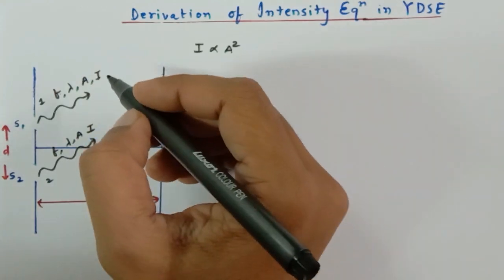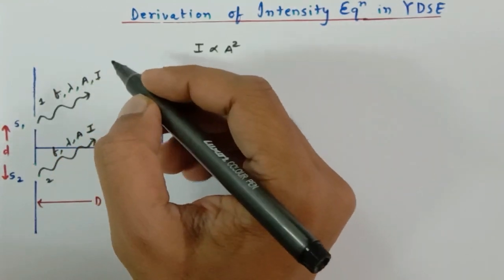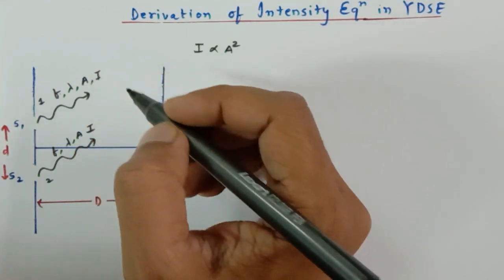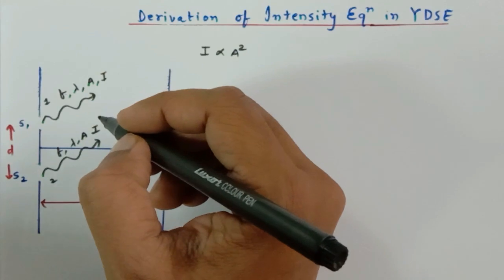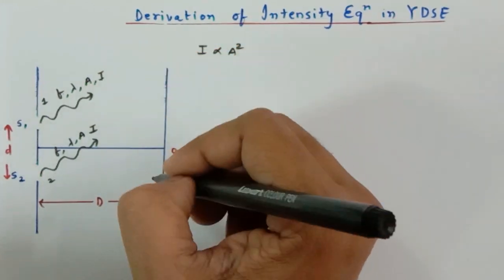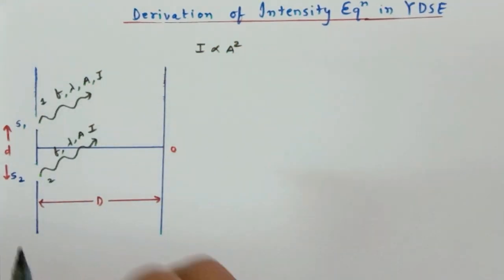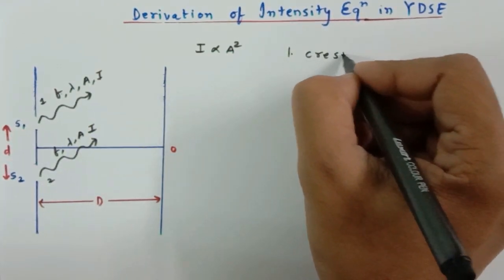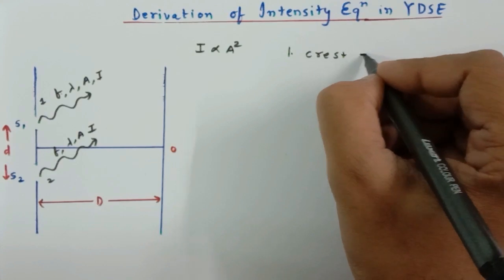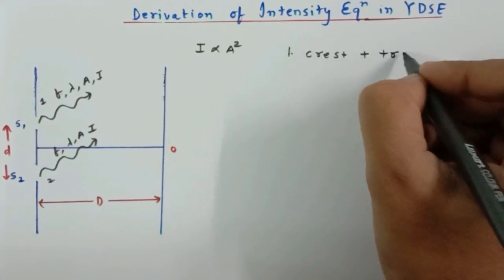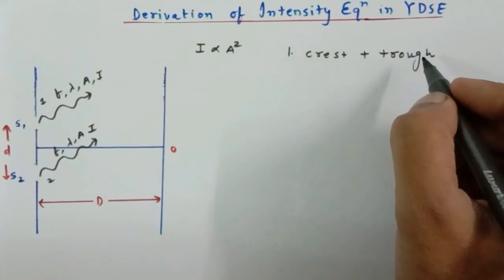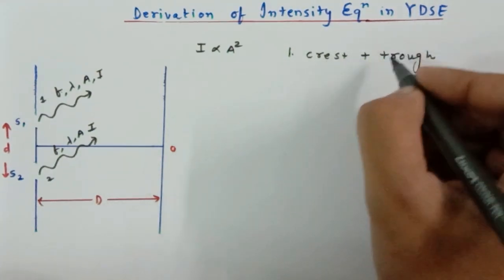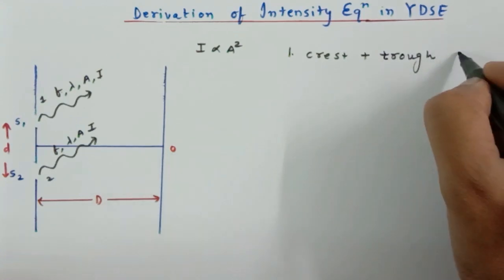I am going to write the amplitude as 'a' to generalize it. These two waves have amplitudes 'a' and now they are going to interfere on the screen. Possibility number one: crest can fall on trough. This is called destructive interference, because the crest would try to nullify the effect of the trough.